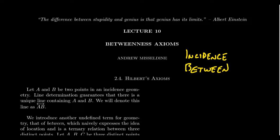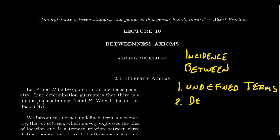Remember how the axiomatic method works. The first step is we look at undefined terms — terms that don't necessarily have definitions. From there, we introduce definitions, things we can define using those undefined terms. Step three is we write the axioms. And then step four is we do the theorems, which is where we spend most of our time, but it's important that we do all of these steps.